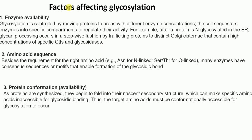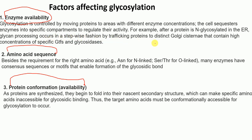What factors affect glycosylation? There are three main factors: enzyme availability, amino acid sequence, and protein conformation. Enzyme availability is controlled by moving proteins to cellular areas with different enzyme concentrations. For example, after a protein is N-glycosylated in the endoplasmic reticulum, glycan processing occurs stepwise as proteins traffic through distinct Golgi cisternae containing specific glycosyltransferases and glycosidases.